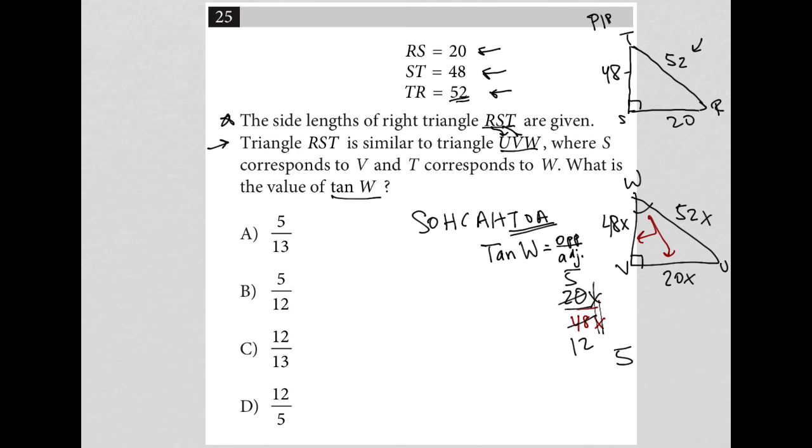So, I'd be left with 5 over 12, and therefore, my correct answer here is choice B.